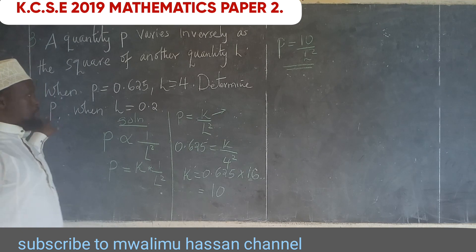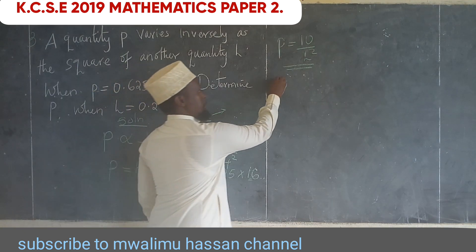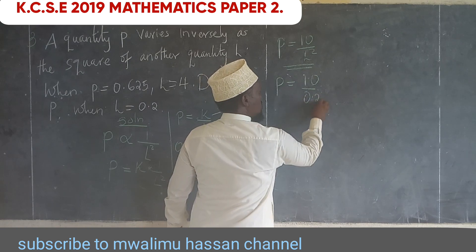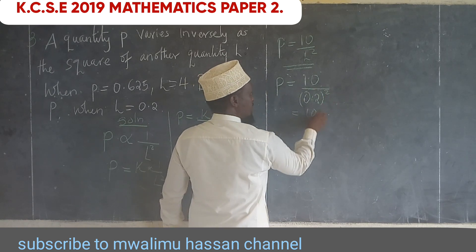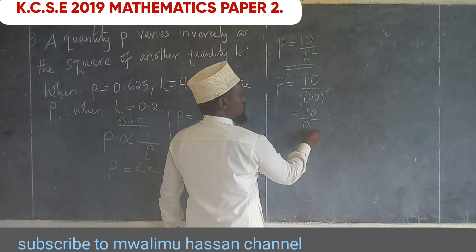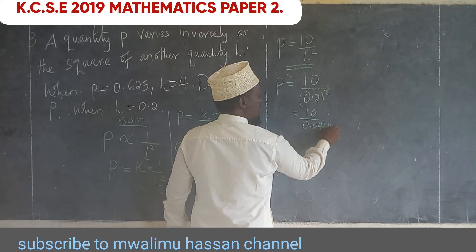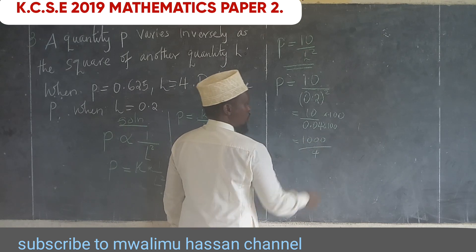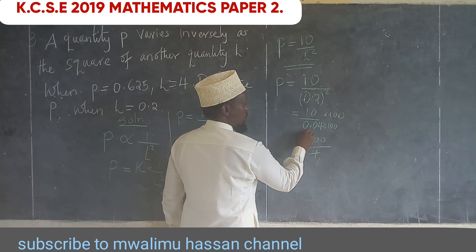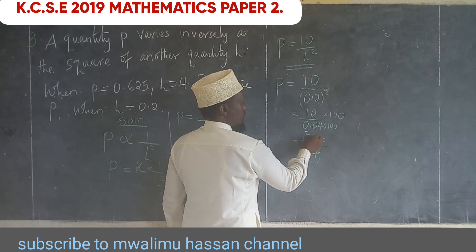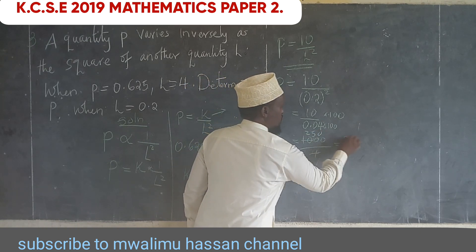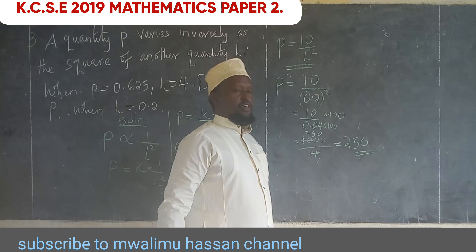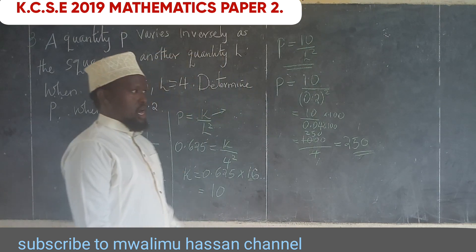Now we find P when N = 0.2. So P = 10/(0.2)² = 10/0.04. Multiplying numerator and denominator by 100, we get 1000/4, which equals 250. Therefore the value of P is 250 when N is 0.2.